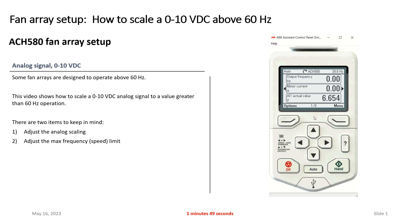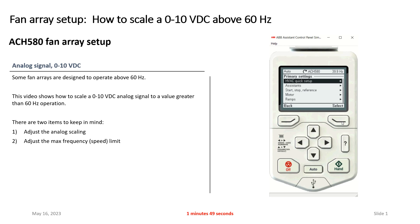So how do you do that scaling? What I'm going to do is go into your hit menu, go into the primary settings, go into my HVAC quick setup. And I'm going to take a look at the second and third options. The second option is where am I getting my speed or frequency reference from in the first place? Factory default is analog input 1, and yes, that's where I got my 0 to 10 volt landed.